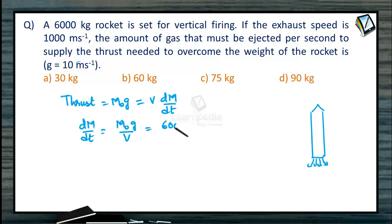Mass of the rocket given to us is 6000, g let us take as 10, divided by V that is 1000. So this will be equal to 60 kg per second, dM/dt.